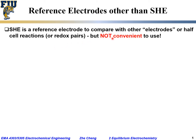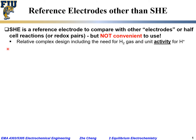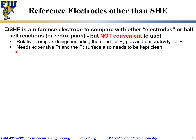However, the SHE is not convenient to use. It is perfect in theory, but has several drawbacks. First, it is a relatively complex design — you need hydrogen gas and you need to guarantee unit activity (not unit concentration) for the proton, which is difficult to ensure. Additionally, it requires expensive platinum, and the platinum surface must be kept very clean to ensure the electrode reaction is reversible and fast.